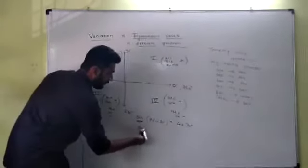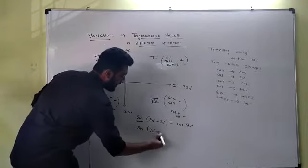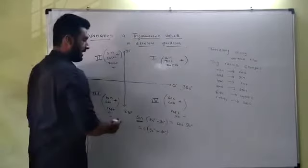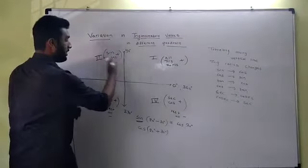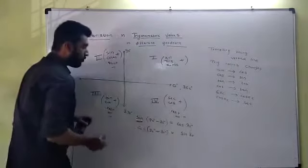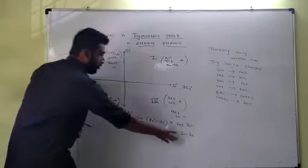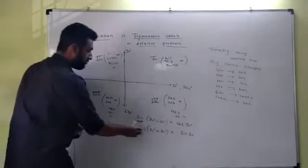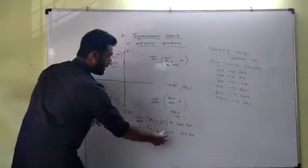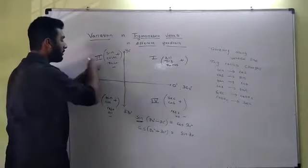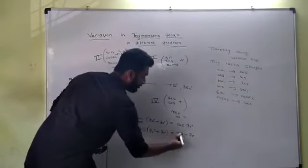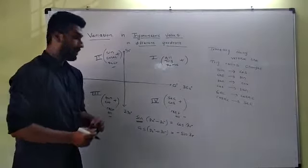Let me give you another example. Let's say cos 90 plus 30. I know when I'm traveling along this line, cos 90 plus 30 will be sin 30. I just told you. Now what about its sign? What will come here, plus or minus? If I'm traveling along this line, 90 plus 30, I'm coming in this quadrant. In this quadrant, cos is negative. So this will be minus sin 30.